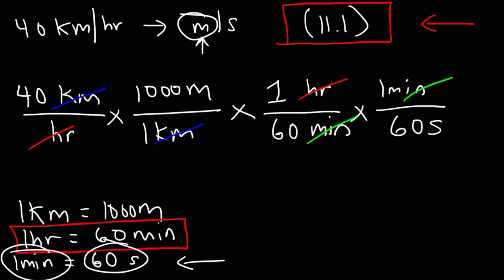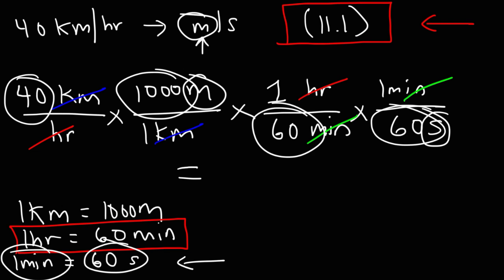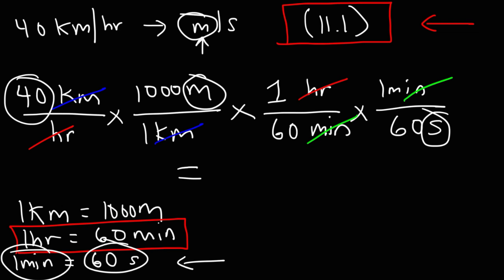We're left with meters on top and seconds on the bottom, which is what we want. Now we do the math — multiply by the numbers on the top and divide by the numbers on the bottom. So it's 40 multiplied by 1,000, divided by 60, and then divided by 60 again. You should get 11.1 repeating — about 11.1 meters per second, the same answer as before.